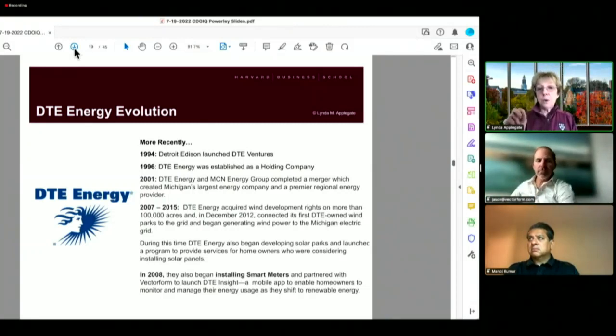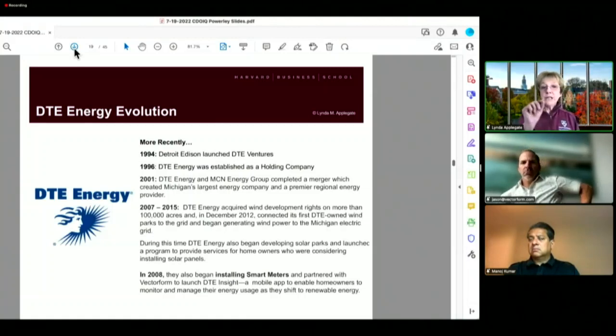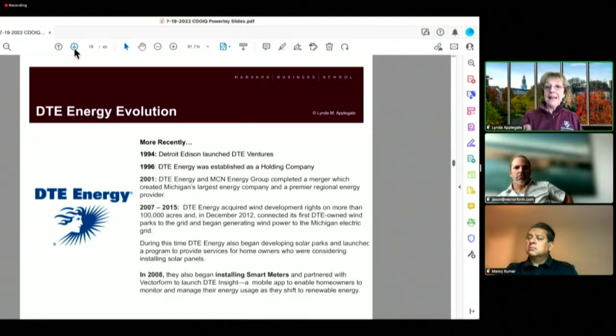Between 2000 and 2015, DTE Energy acquired wind development rights on more than 100,000 acres and in December 2012 connected its first DTE-owned wind parks to the grid and began generating wind power to the Michigan electric grid and to consumers.